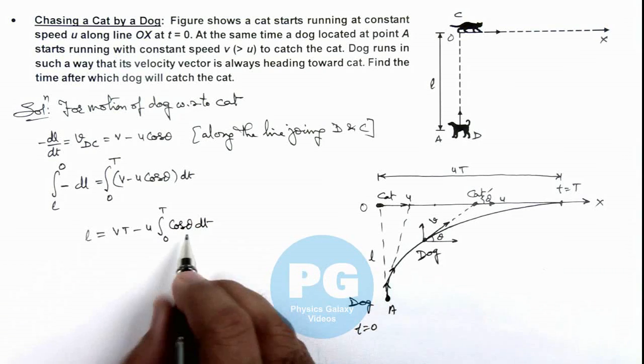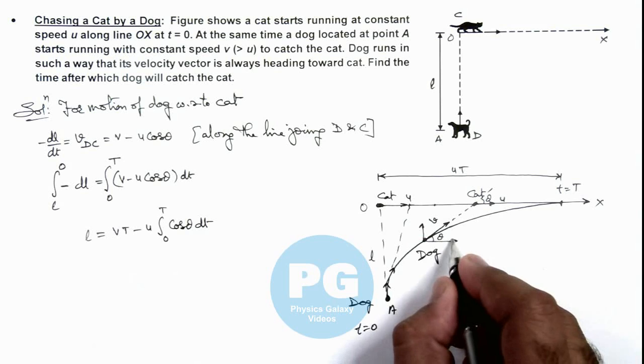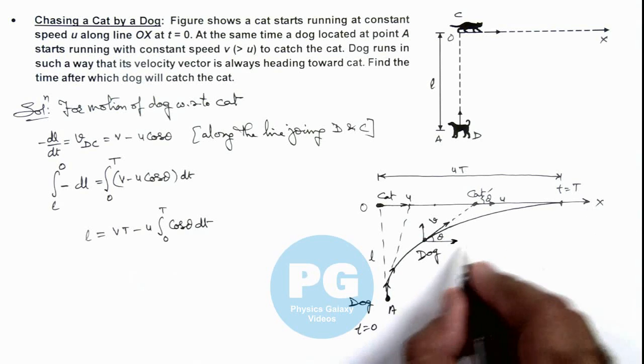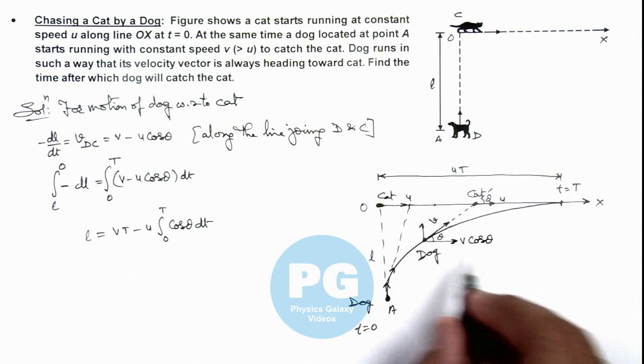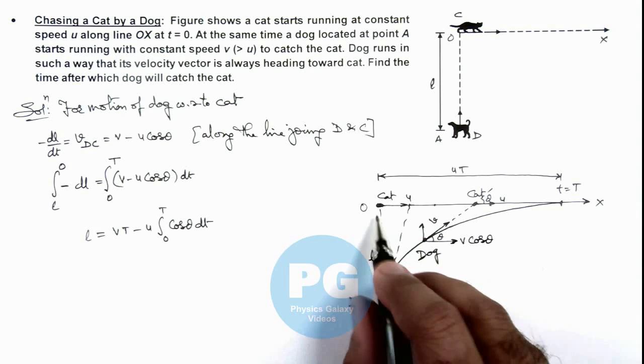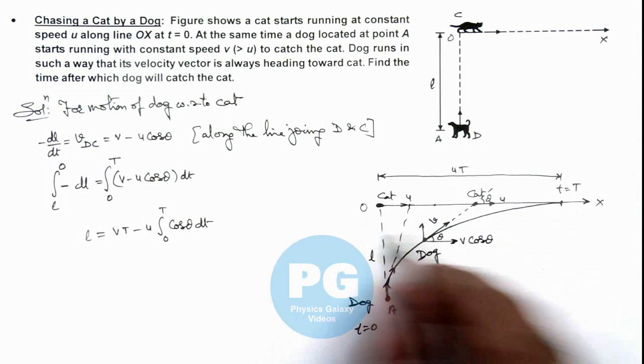Here we can see the horizontal or the x direction component of dog's velocity which is v cos theta. So here we can see dog has also covered a distance u t in x direction.